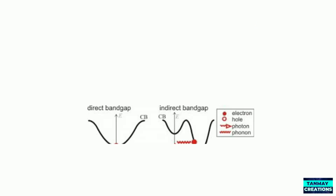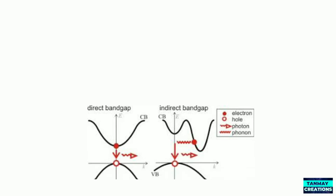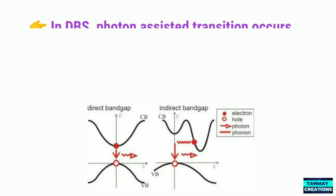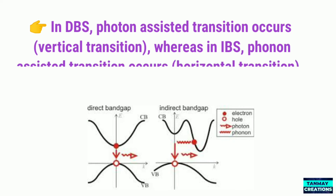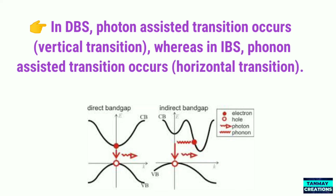Let us now talk about the nature of the transition and the energy and momentum of phonons and photons. In direct band gap semiconductors, photon-assisted transitions occur. Photons are massless entities and carry very little momentum, and this type of transition is essentially vertical in the EK diagram.